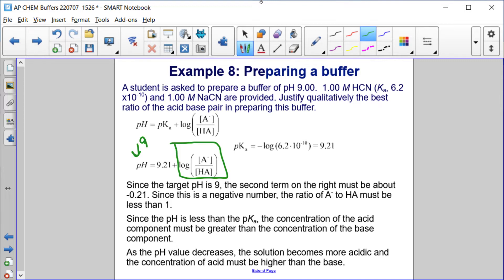Since that's a negative number, you have to think in terms of logs here, but since this is a negative number, the ratio of A minus to HA must be less than 1, and what that means is the HA must be greater, so that we get a value less than 1 when we divide the two. Since the pH is less than the pKa, the concentration of the acid component must be greater than the concentration of the base component. As the pH value decreases, the solution becomes more acidic, and the concentration of acid must be higher than the base.